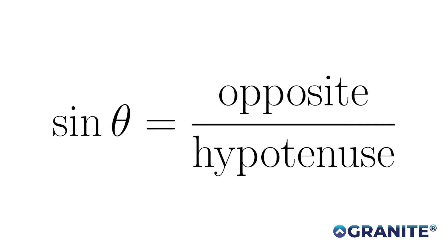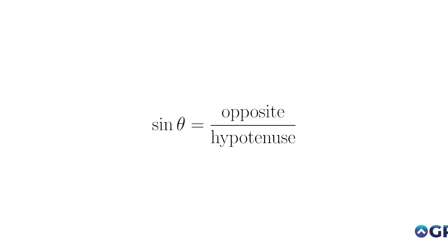Tip number six: sine of theta — only in a right triangle — equals the length of the opposite side over the length of the hypotenuse. You also need to know cosine and tangent. Many of you may know the mnemonic SOH CAH TOA: Sine = Opposite/Hypotenuse, Cosine = Adjacent/Hypotenuse, Tangent = Opposite/Adjacent. This is probably worth three or four questions on the ACT, so knowing sine is opposite over hypotenuse is essential.